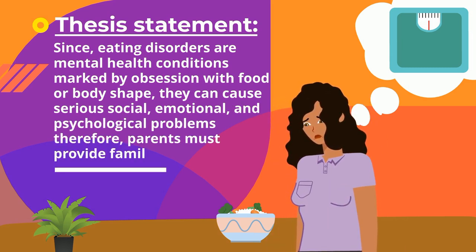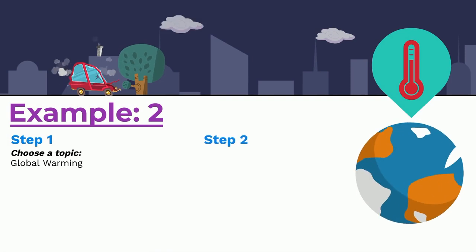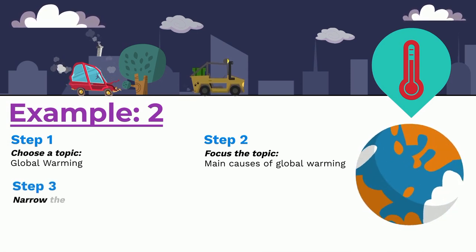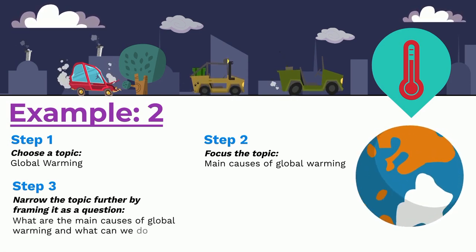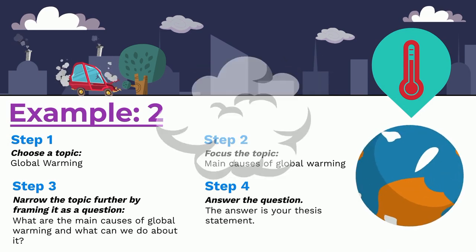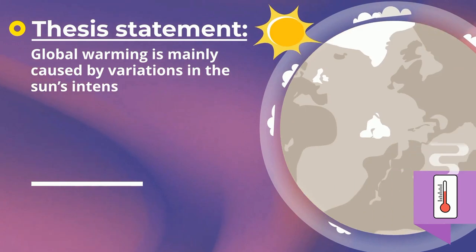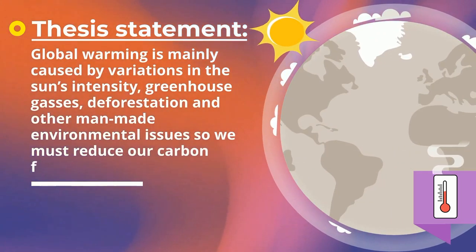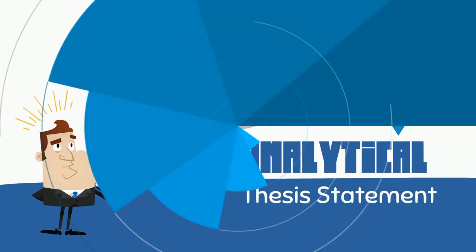Example two: Step one, choose a topic — global warming. Step two, focus the topic — main causes of global warming. Step three, narrow the topic further by framing it as a question: what are the main causes of global warming and what can we do about it? Step four, answer the question. Thesis statement: global warming is mainly caused by variations in the sun's intensity, greenhouse gases, deforestation, and other man-made environmental issues, so we must reduce our carbon footprint.